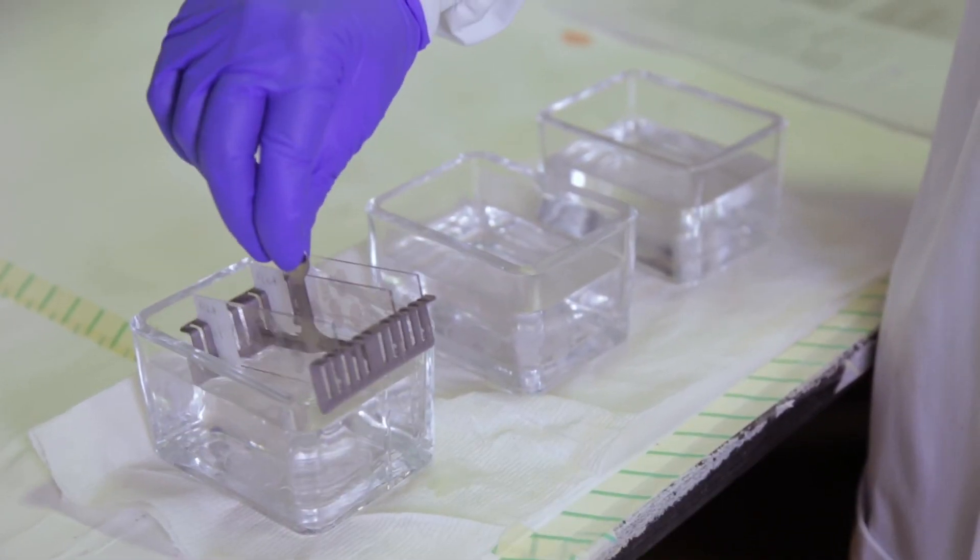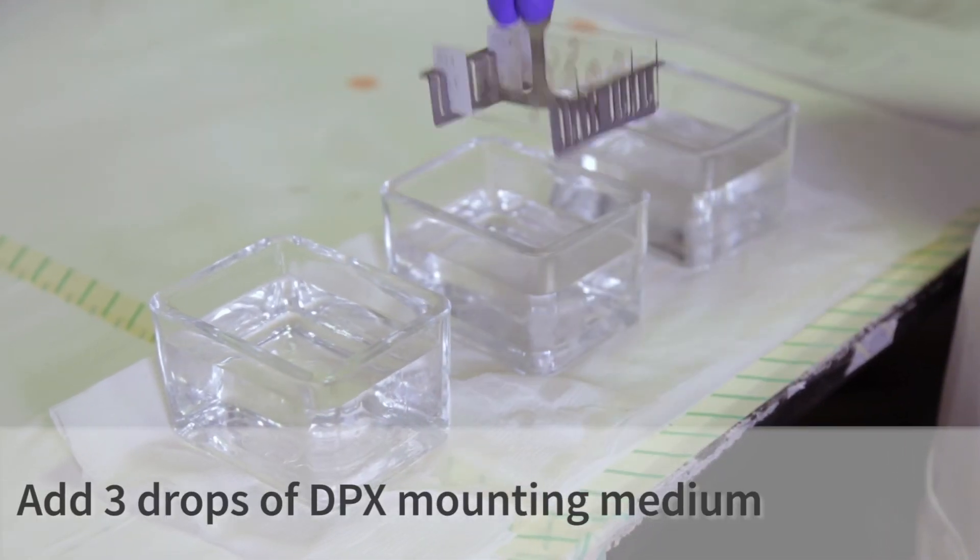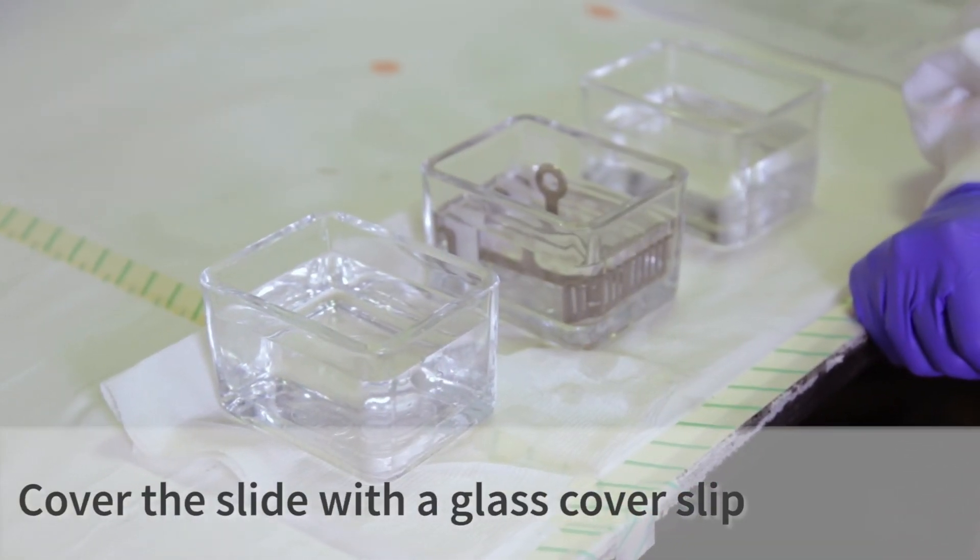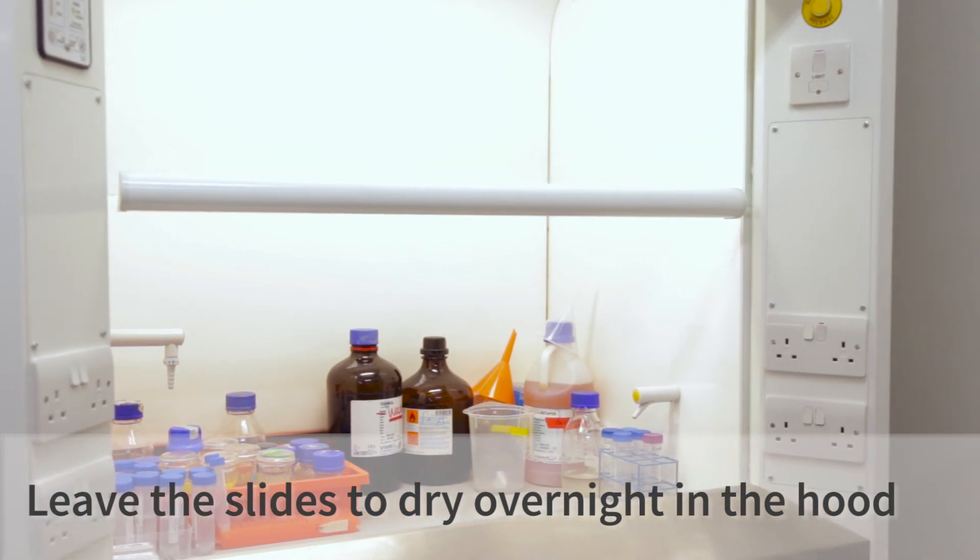After the histoclear washes, the slides are mounted by putting three drops of DPX onto the slide and then covering with a cover slip. Use DPX in the fume hood.